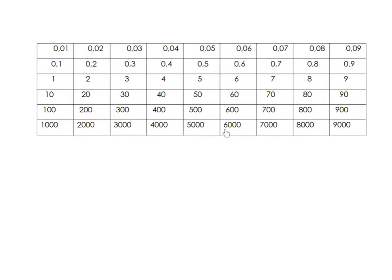And dividing by 10 is just the opposite way around. 6,000 divided by 10 becomes 600. So you're kind of moving the place value of the 6 over to the right. 600 divided by 10 becomes 60. 60 divided by 10 becomes 6. 6 divided by 10 becomes 0.6. And 0.6 divided by 10 becomes 0.06.